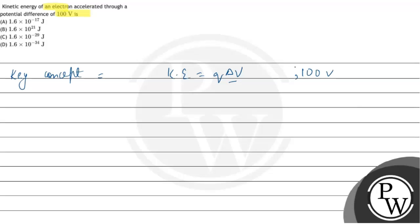And we know the electronic charge of an electron is given as Q. How much is it? 1.6 into 10 to the power minus 19 coulomb.